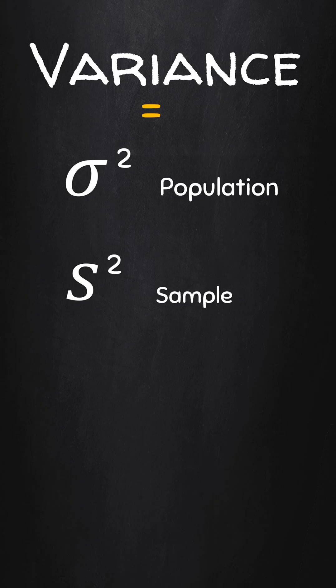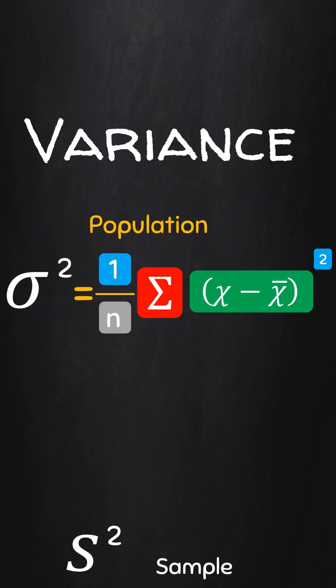The formula for computing the variance for a population is given by this, while that of the sample is given by this.